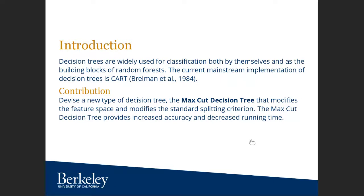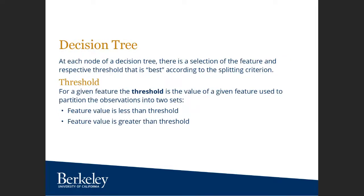The Max Cut decision tree provides increased accuracy and decreased running time for training decision trees. A decision tree is a tree where at each node there is a selection of a feature and a respective threshold that is best according to the splitting criterion. Once a feature and threshold are selected, observations are partitioned into two sets: those with feature value less than the threshold, and those greater.